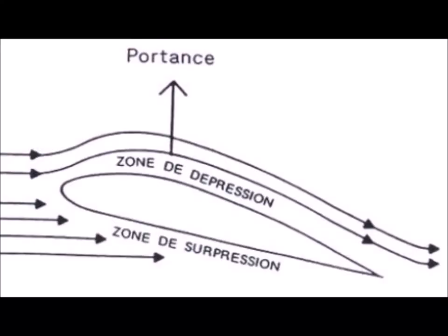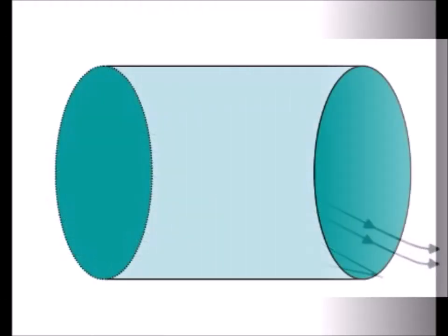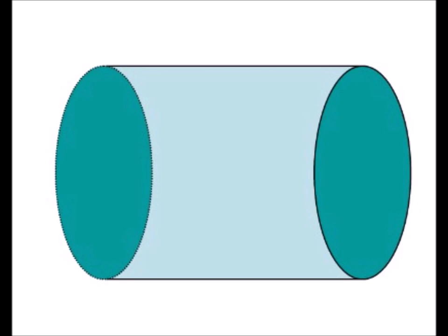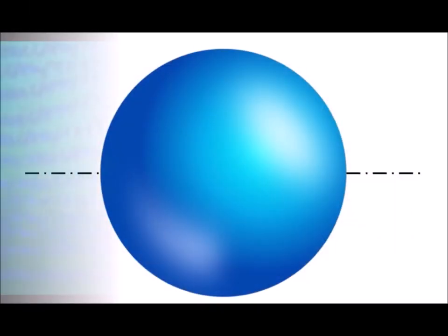The lift of wing profiles is based on their asymmetry. The Magnus effect applies to all symmetrical bodies such as cylinders and spheres rotating on themselves.